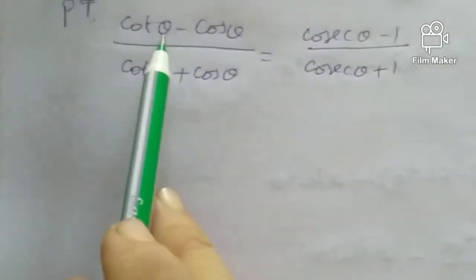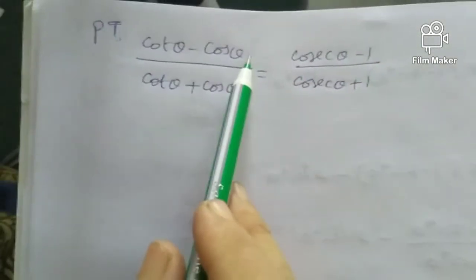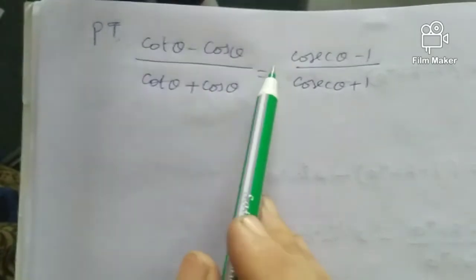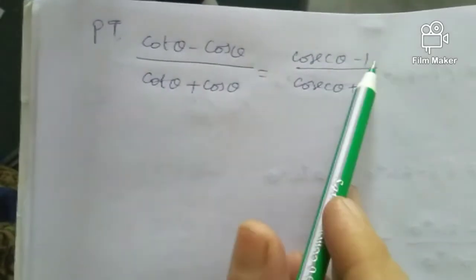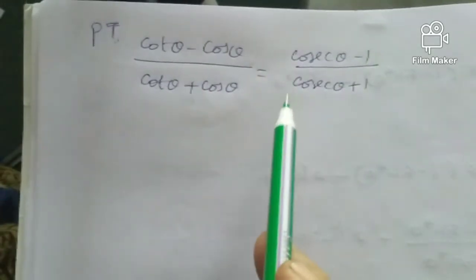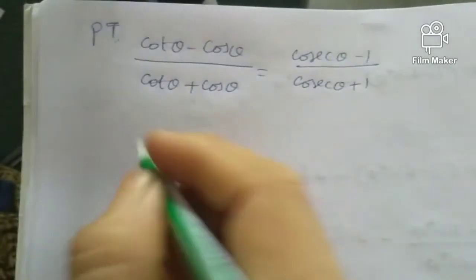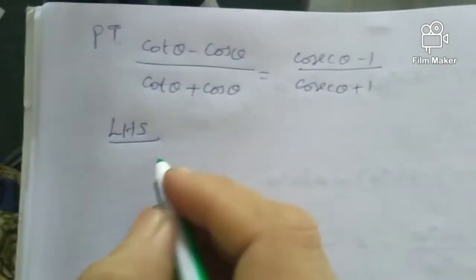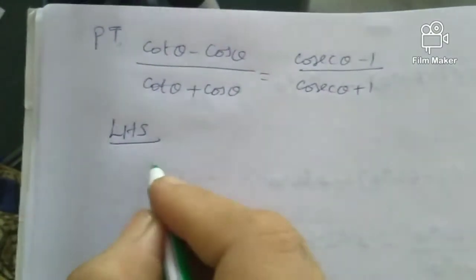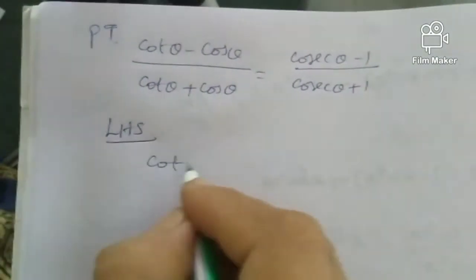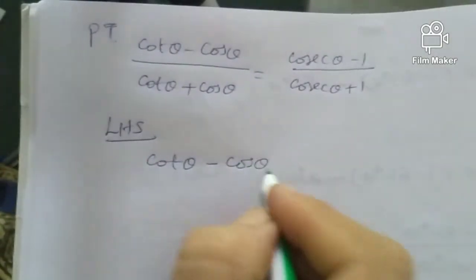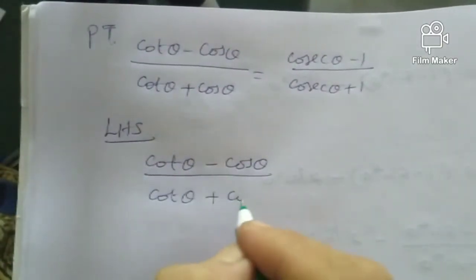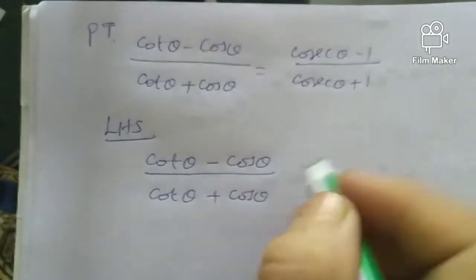Prove that cot theta minus cos theta by cot theta plus cos theta is equal to cosecant theta minus 1 by cosecant theta plus 1. Taking the LHS, we have cot theta minus cos theta by cot theta plus cos theta.